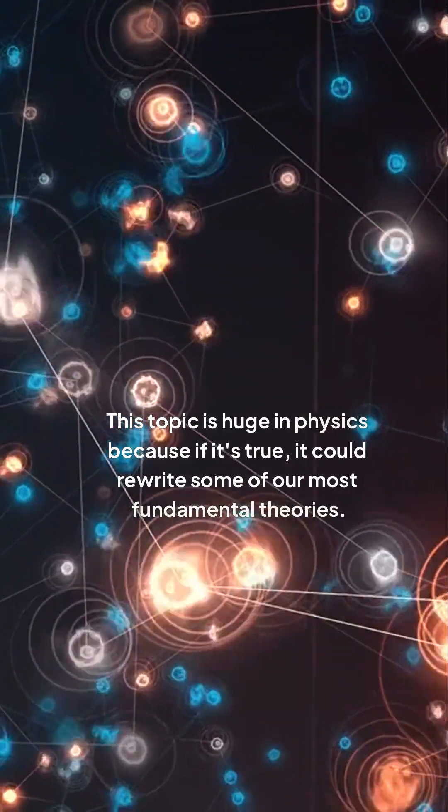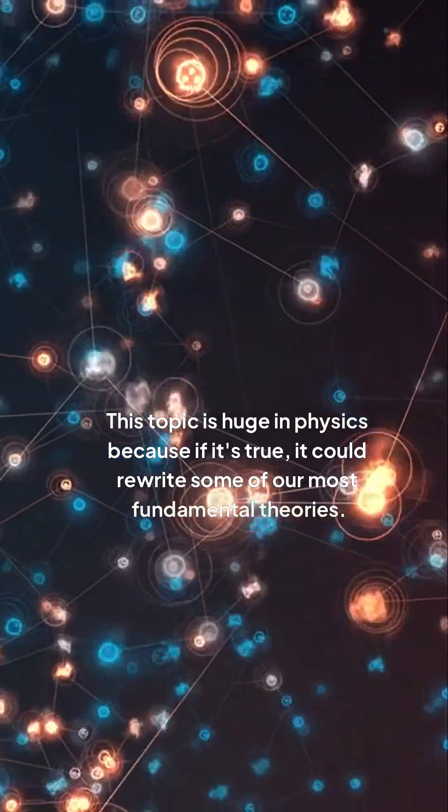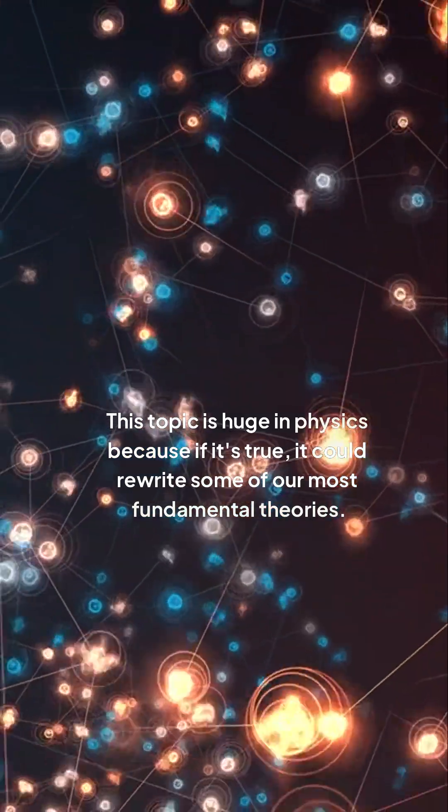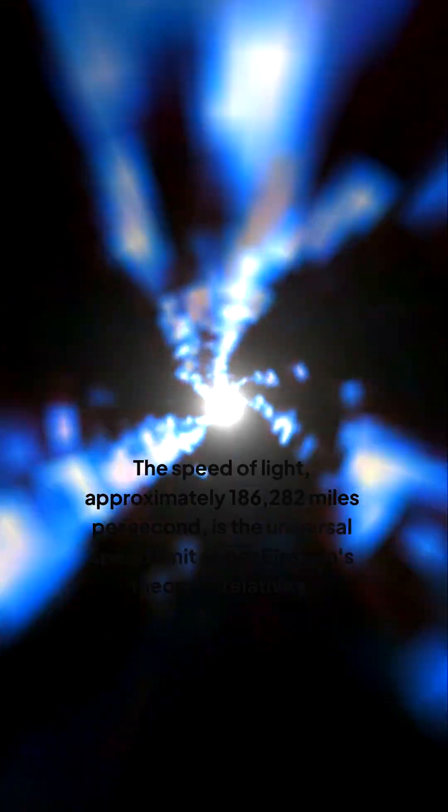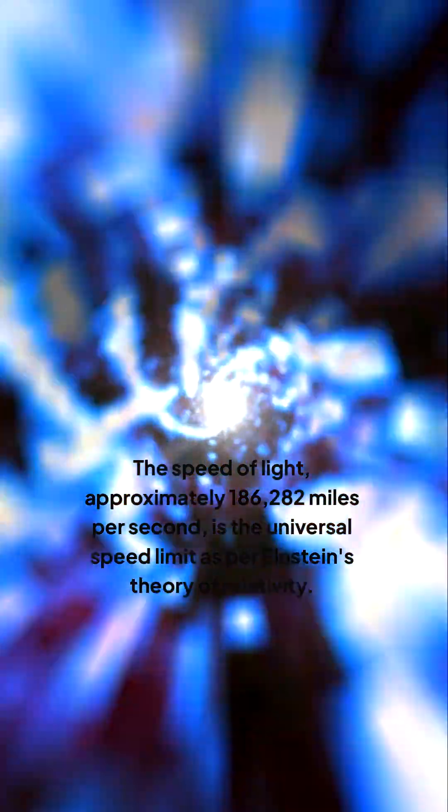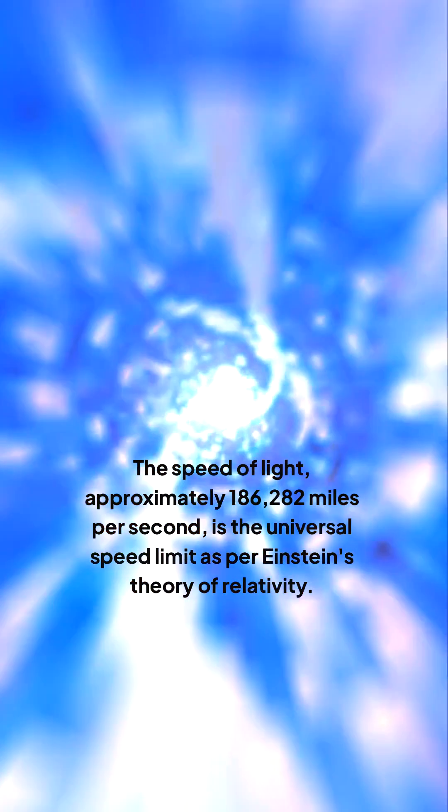This topic is huge in physics because if it's true, it could rewrite some of our most fundamental theories. The speed of light, approximately 186,282 miles per second, is the universal speed limit as per Einstein's theory of relativity.